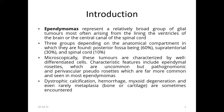Microscopically, these tumors are characterized by well-differentiated cells. A characteristic feature of ependymoma is the rosette, which is uncommon but pathognomonic, and perivascular pseudorosettes, which are far more common and seen in most ependymomas. Dystrophic calcification, hemorrhage, mixed cystic degeneration, and rarely metaplasia are sometimes encountered.